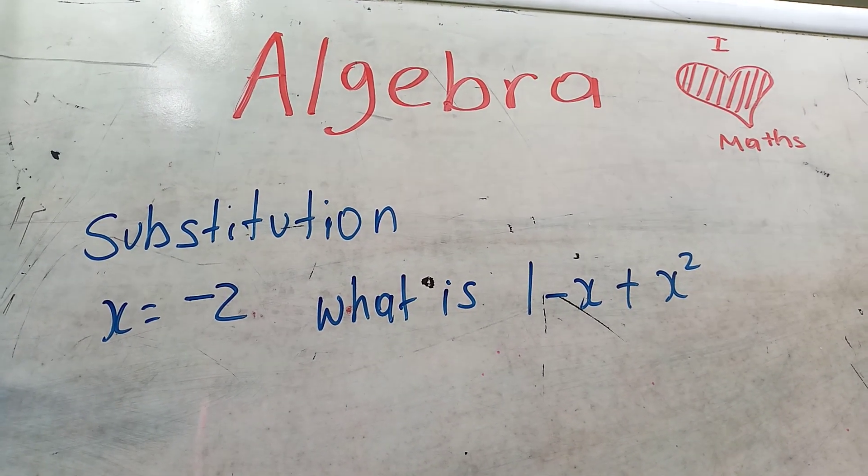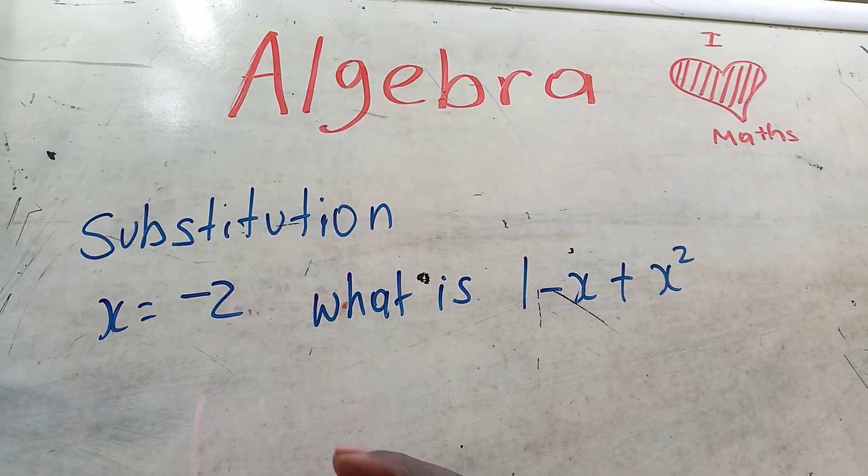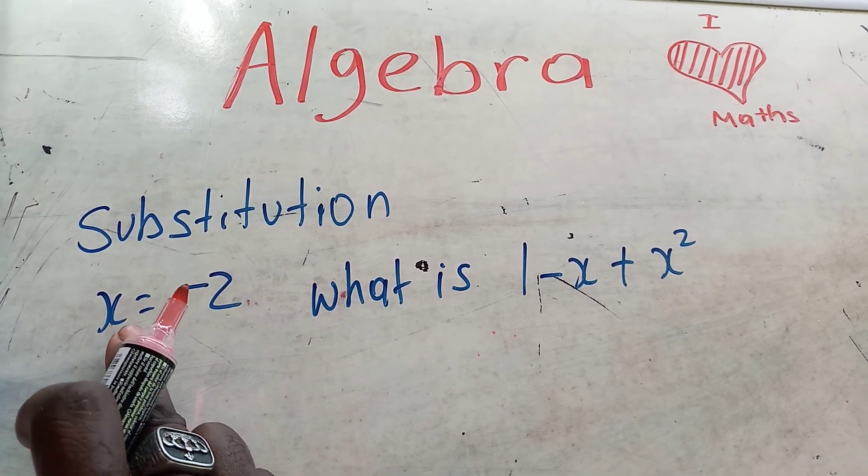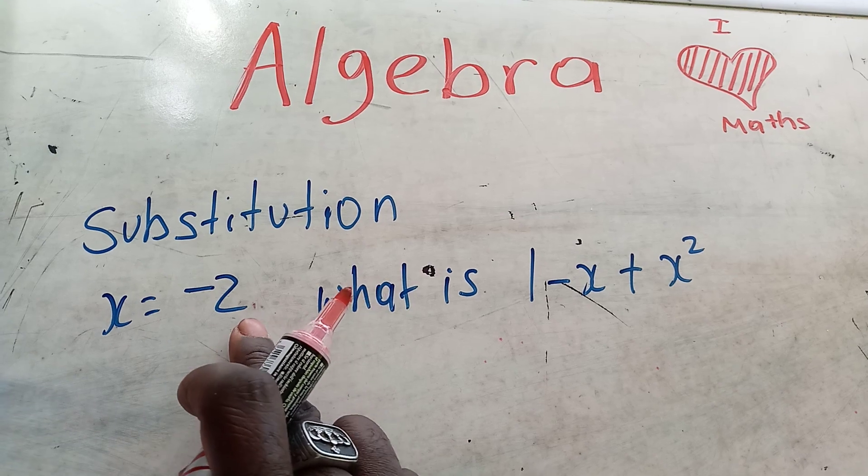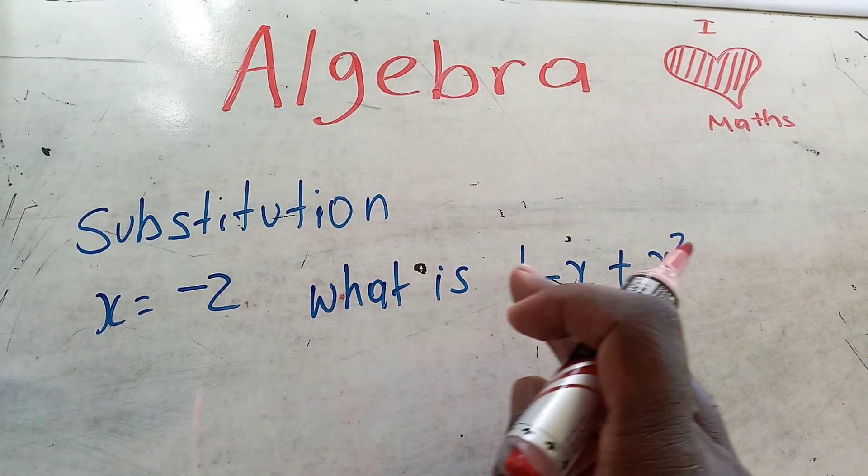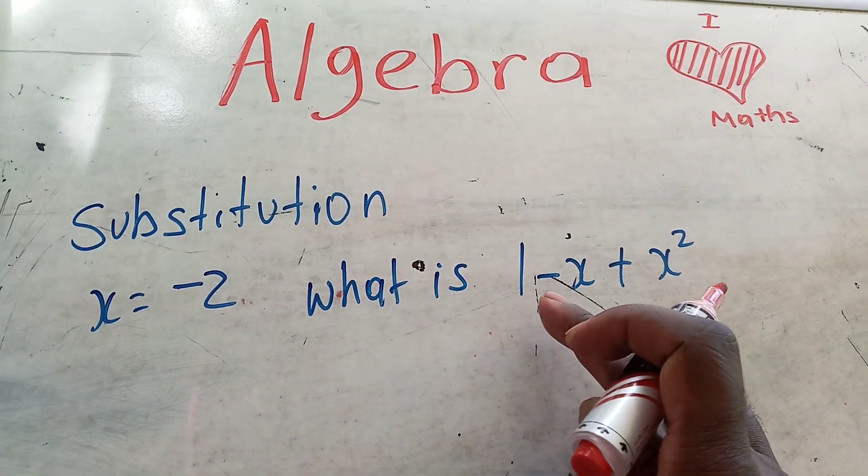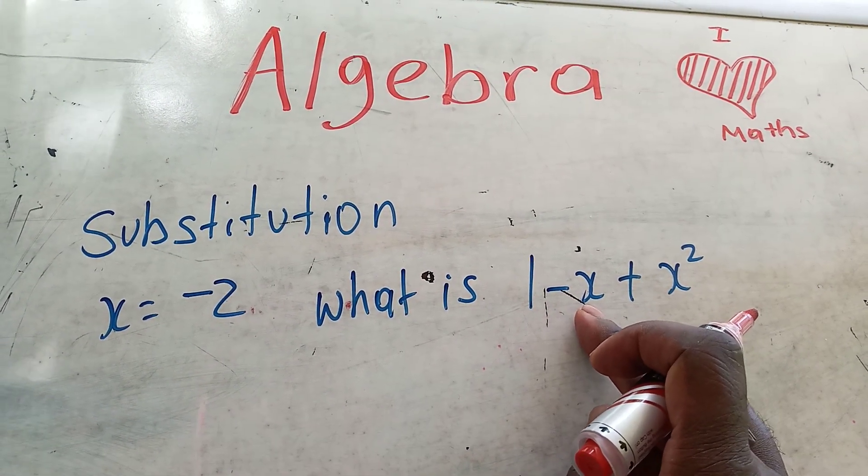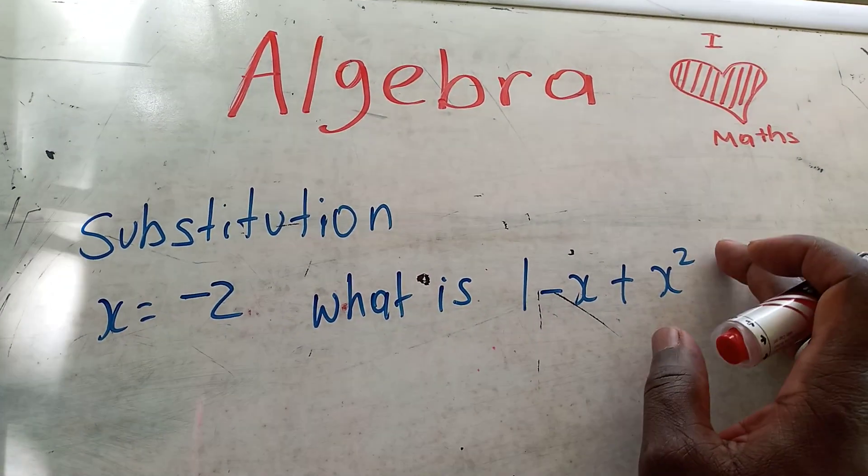So substitution means we're going to substitute the variable for a number, whichever number it wants to be. So wherever there's x, we're going to put negative 2. Let x be negative 2, and here we have an exponent.